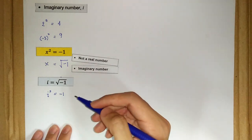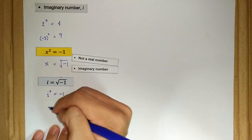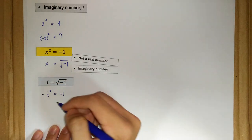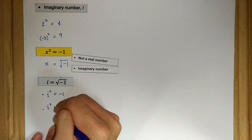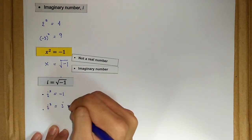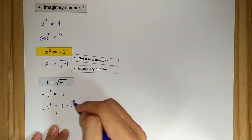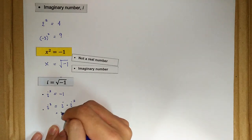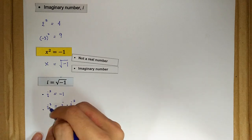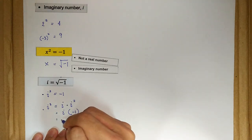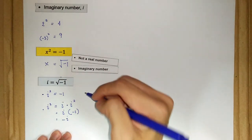We can also continue with greater powers. i to the power of 3 is just i times i squared, where i squared is equal to negative 1. Therefore, we have i times negative 1, so i to the power of 3 is equal to negative i.